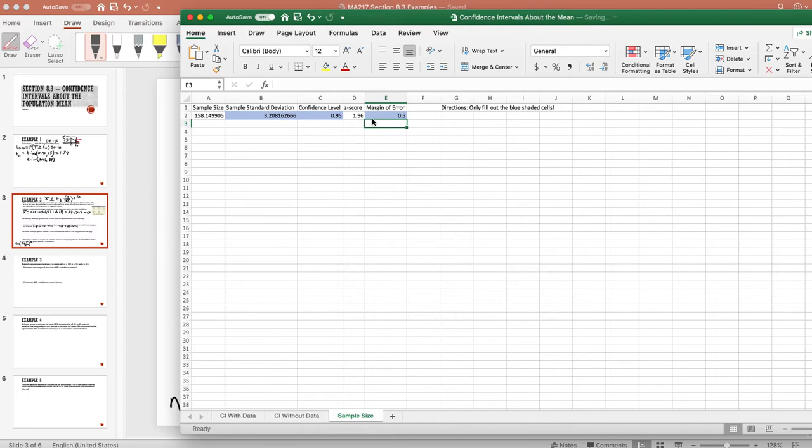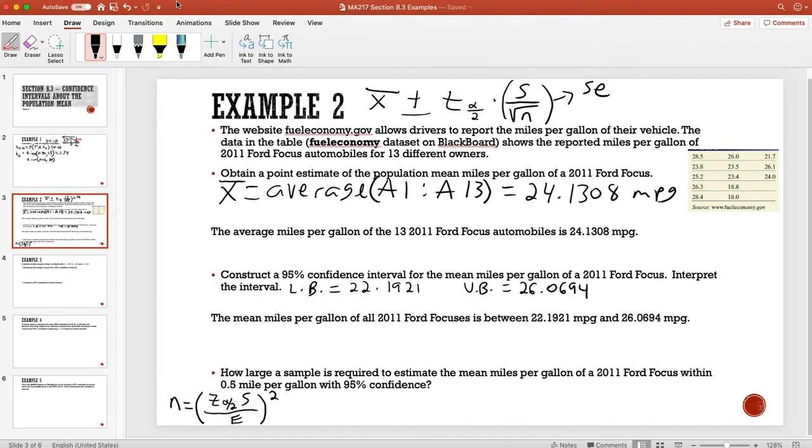That gives us a value of 158.15. If we had used the exact value of 3.2082, notice how that just changed the sample size slightly, but both times it's about 158. We would want to round that up to 159. So 158.15 rounds up to 159, which gives us 159 of the 2011 Ford Focus automobiles.